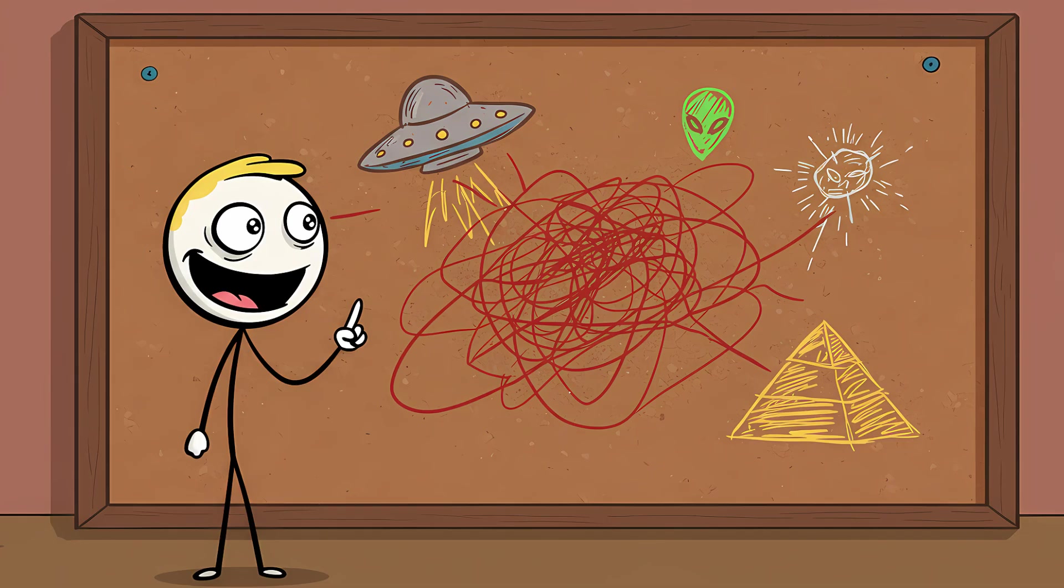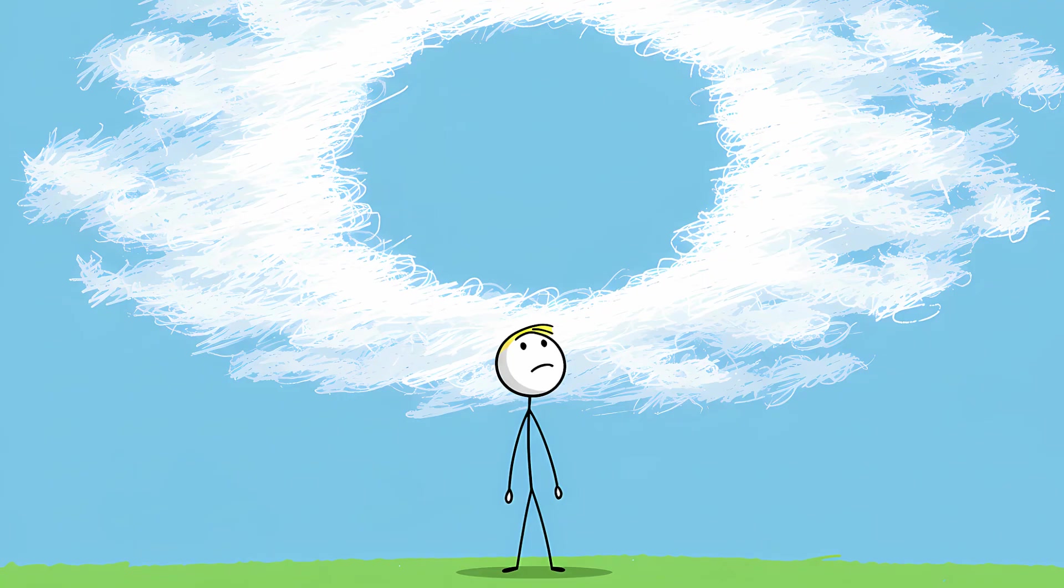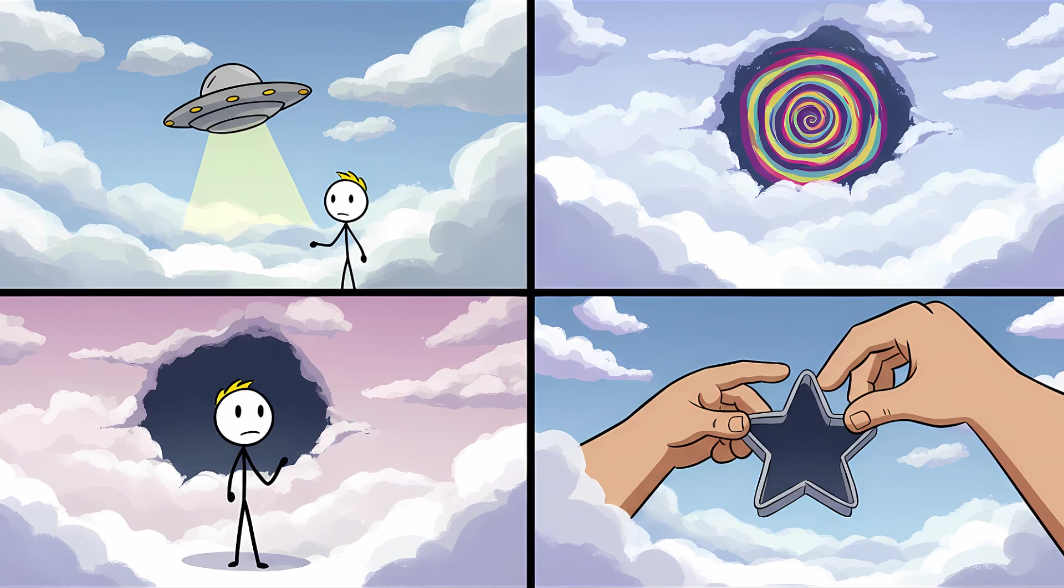Hole Punch Clouds. Imagine you're a dedicated conspiracy theorist. You've spent years connecting the dots with red string on a corkboard. And today is the day you're finally vindicated. You look up at the sky, and there it is. A perfect, impossibly neat circular hole punched directly into a thin layer of clouds. It's a UFO landing pad. It's a sky portal. It's proof that the government is testing its giant celestial cookie cutter.